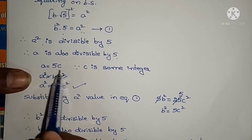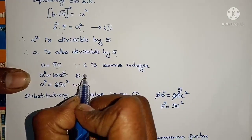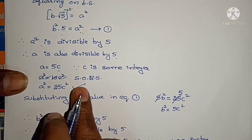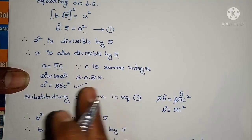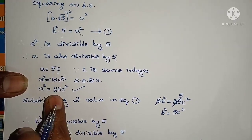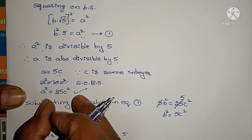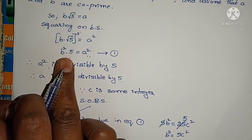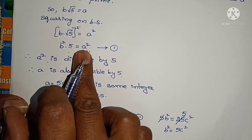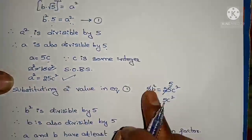Therefore we can write a = 5c, where c is some integer. Squaring on both sides: a² = 25c². Now substituting this value in equation 1 — where 5b² = a² — in place of a² I am substituting 25c².